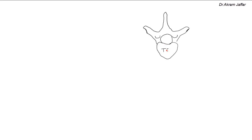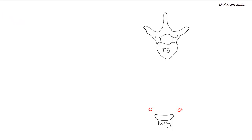So this is at the level of T5 vertebra. Anteriorly is the sternum — this should be the section in the body of the sternum, because since we are at the level of T5 vertebra, the body of the sternum starts at the level of the lower border of T4 at the manubriosternal joint. On either side of the sternum there is an internal thoracic artery, and the internal thoracic artery gives rise in each intercostal space to anterior intercostal arteries. There are actually two anterior intercostal arteries in each intercostal space, and these are short and small branches.